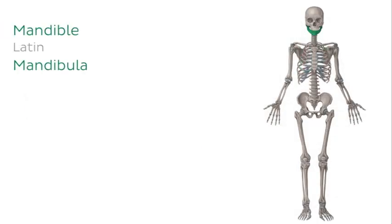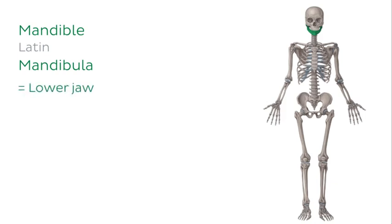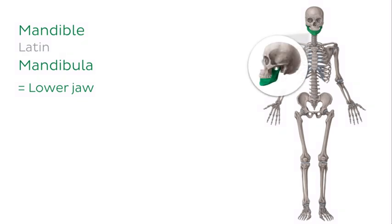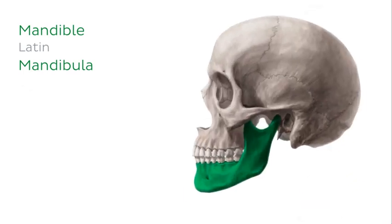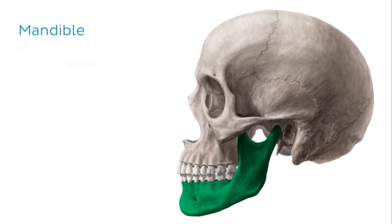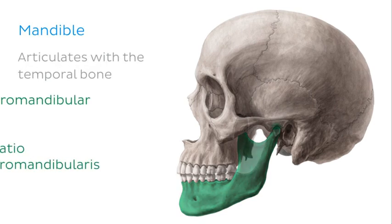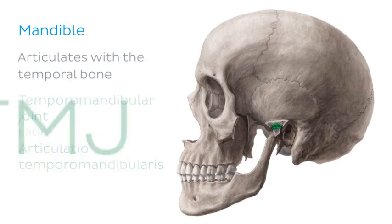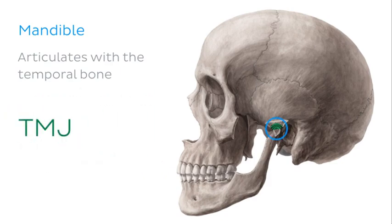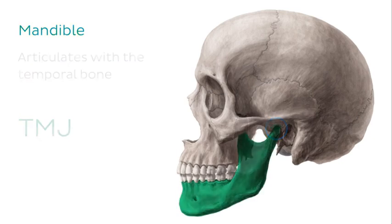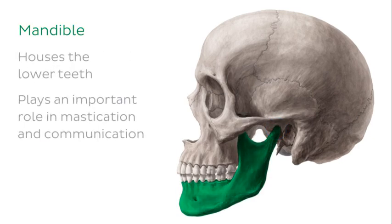The mandible is the other bone that makes up the jaw. It's also known as the lower jaw and is the only bone of the skull that doesn't articulate with other cranial bones via sutures. Viewing the skull from the side, we can see that it actually articulates with the temporal bone via the temporomandibular joint or TMJ. The mandible houses the lower teeth and like the maxilla, it also plays an important role in mastication and communication.